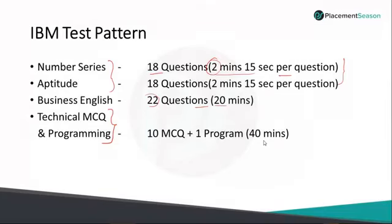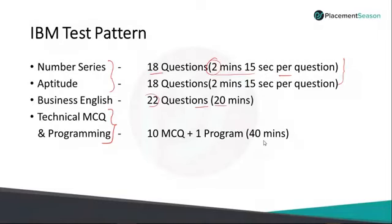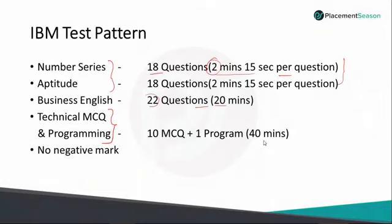To summarize the IBM test pattern: Number Series — 18 questions, 2 min 15 sec per question; Aptitude — 18 questions, 2 min 15 sec per question; Business English — 22 questions, 20 minutes total; Technical MCQ and Programming — 10 MCQ plus 1 programming question, 40 minutes total. There is no negative marking for wrong answers, so you can attempt all questions even if unsure.